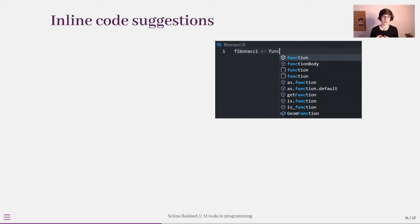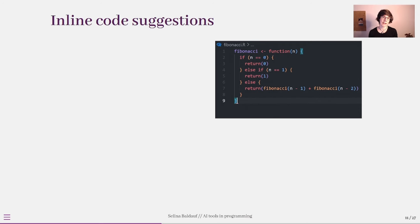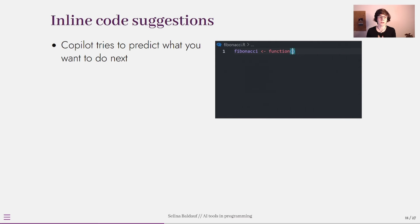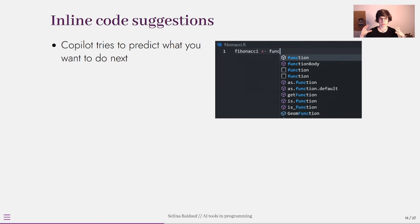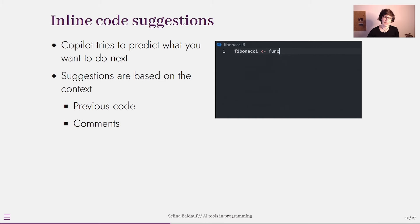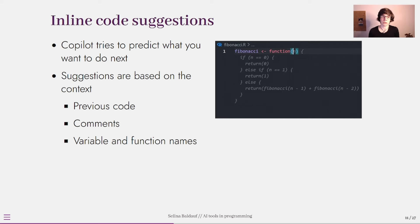Now let's look at the main features of GitHub Copilot. The first and most important one is inline code suggestions. This is the primary feature of GitHub Copilot and it's supported in all IDEs including RStudio. What GitHub Copilot does is predict the most likely thing you want to do next and suggest code based on this. The suggestions are based on the context of your project or code file — it looks at previous code, comments you write, and the names of variables and functions.